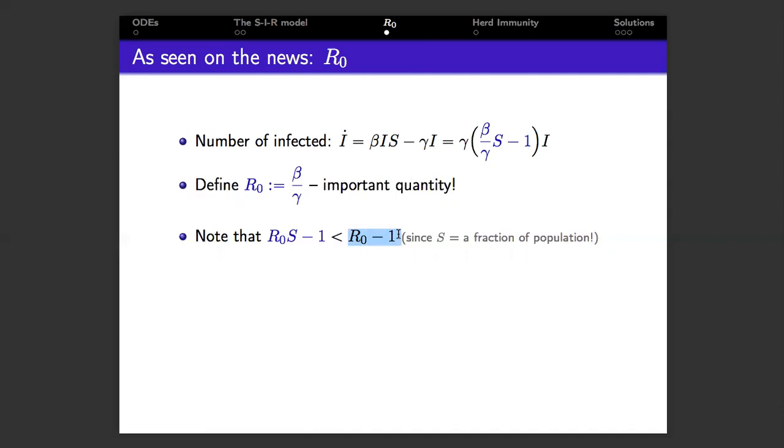If R₀ is less than one, then this combination which appears in our equation is less than zero. It is negative. In other words, the rate of change of I is negative, which means that the number of infected is just falling off. It decreases and it decreases to zero. So the infection dies out on its own. Good.